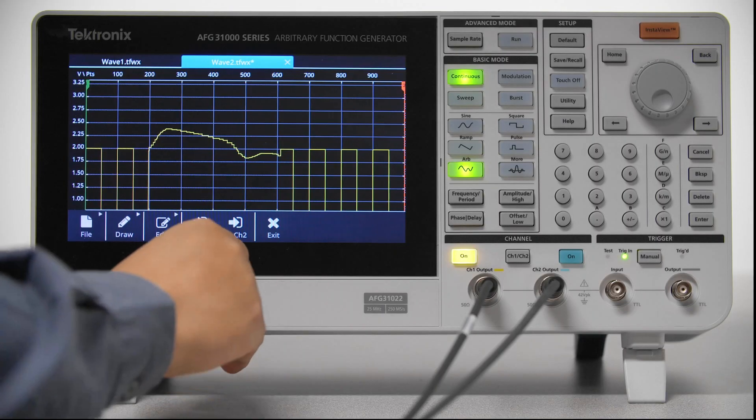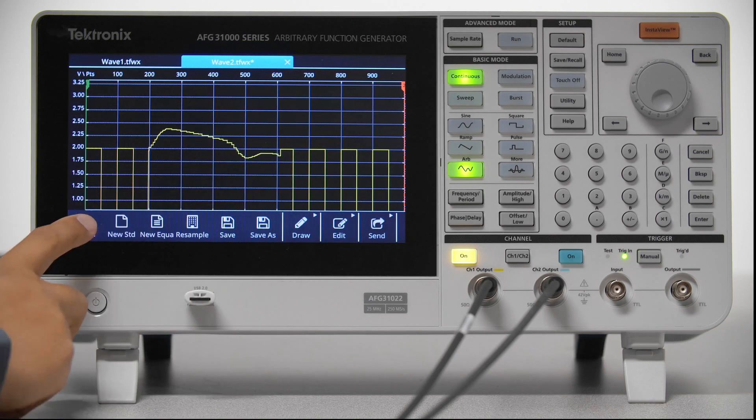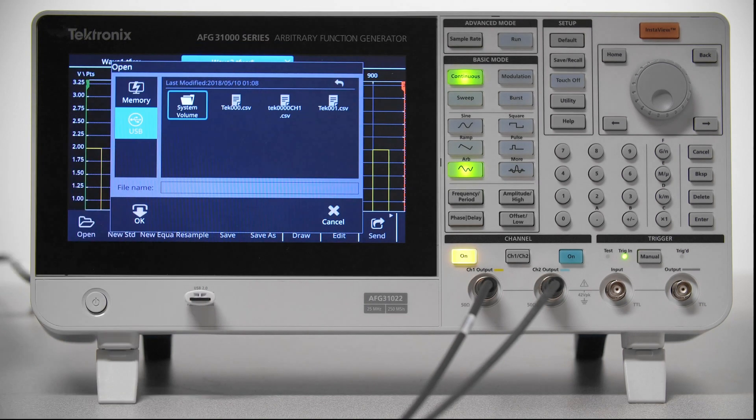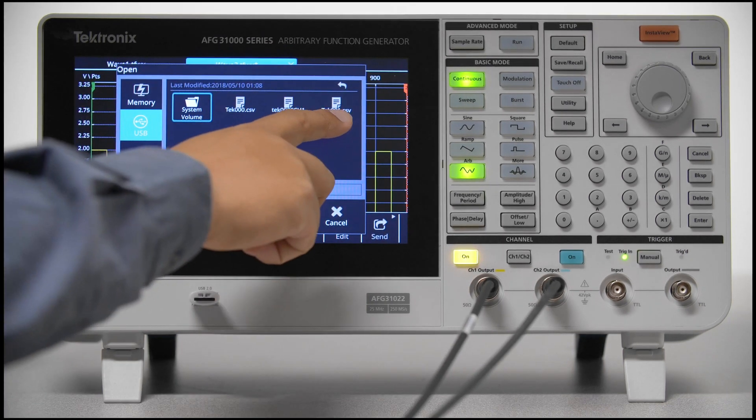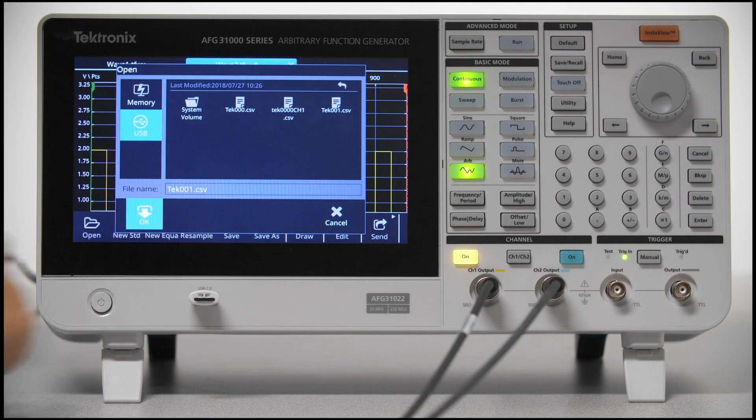We can also save the waveform from the scope and import it to the AFG using a thumb drive. Here you see the saved waveform from the scope. Just click on it and press OK and we've successfully imported the waveform.